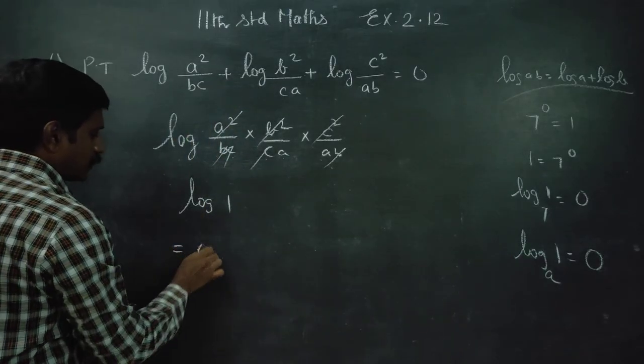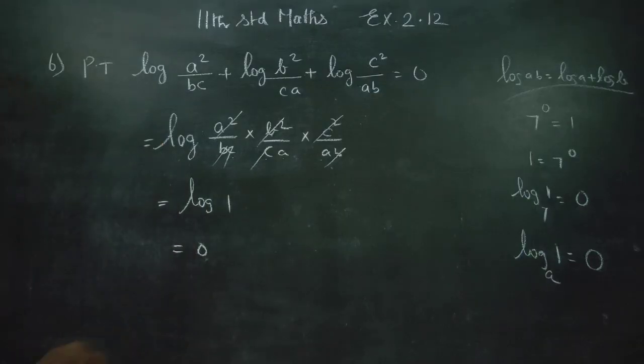Log 1 is equal to 0. Log a times b is equal to log a plus log b. It is called the product rule.